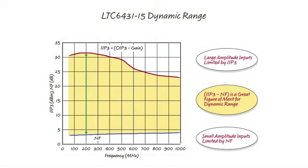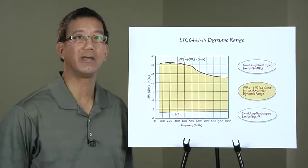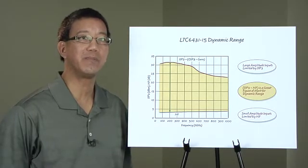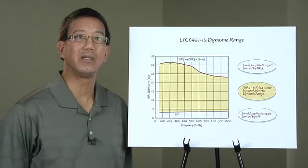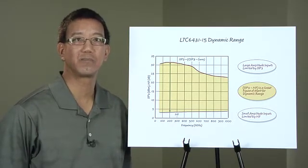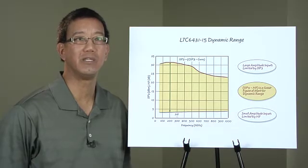Probably the greatest focus of the LTC6431-15 design was dynamic range. At some point, all amplifiers limit system performance. When the input signal gets too large, distortion, or when the signal gets too small, noise. Both of these characteristics have to be considered simultaneously. If we look at the input port of an amplifier, a good figure of merit would be the input IP3 minus the noise figure. The LTC6431-15 has been carefully optimized to maximize this value, thereby maximizing dynamic range. With an input IP3 of 32 and a noise figure of 3.3, the LTC6431-15 achieves a world-class value of 29 dB using this metric.